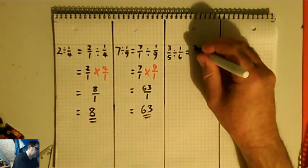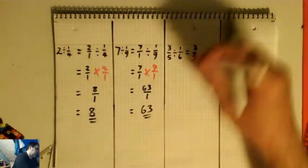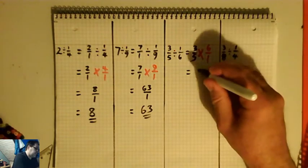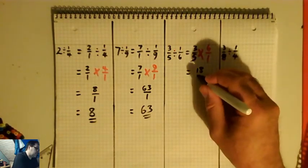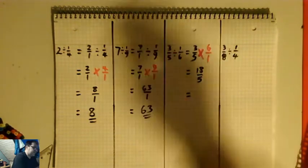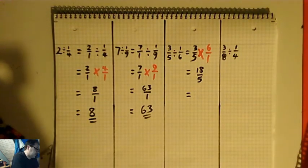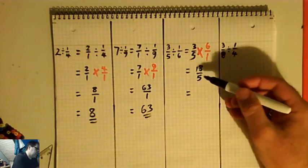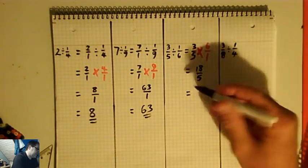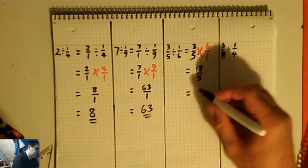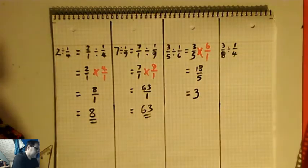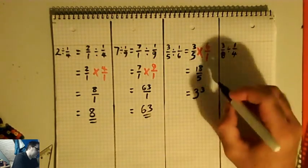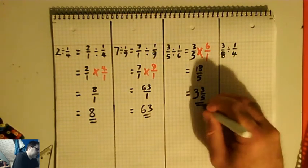Next one is three-fifths times six over one. Three times six on the top is 18, five times one on the bottom is five. So we've got 18-fifths, which is top-heavy — or improper, or a vulgar fraction, to give it different names. Five goes into 18 three times to give 15, but then I've got three left over, because that only makes 15 and I've got 18. So that's the same as three and three-fifths.